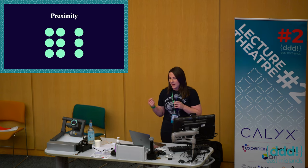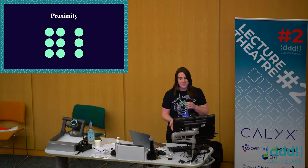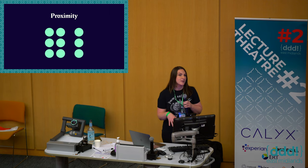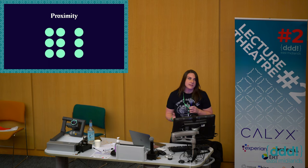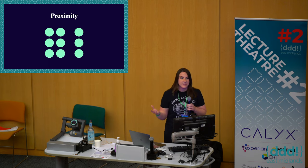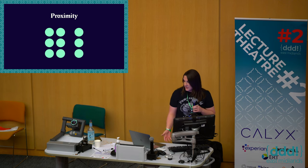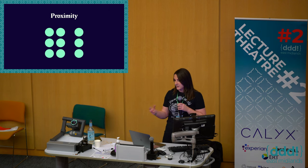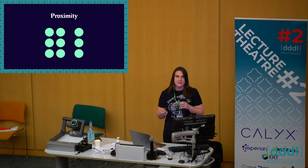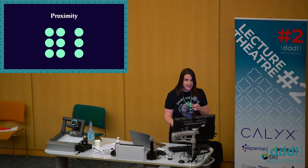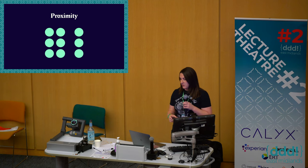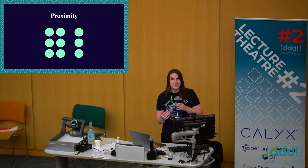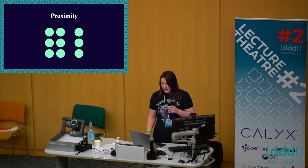Proximity is part of a larger set of principles called gestalt principles. They were discovered in the first half of the 20th century by psychologists who were looking to understand how humans made sense of the world and how we decided that things belong together. In design, proximity is looking at the content, understanding the relationship it has to other pieces of content, and placing them together in a way that makes sense. The distance — or lack of distance — between items helps us understand those connections. If a heading and a paragraph of text sit closely underneath each other, we can assume those things belong together.